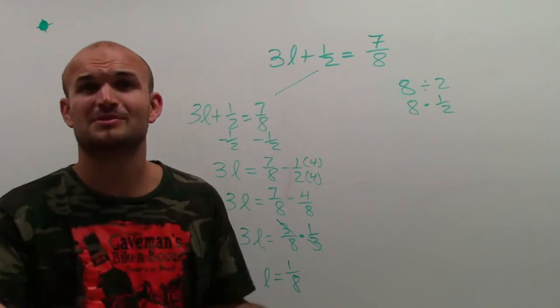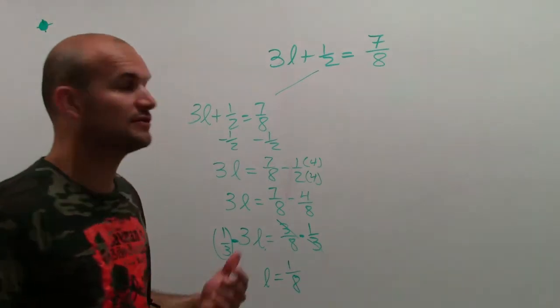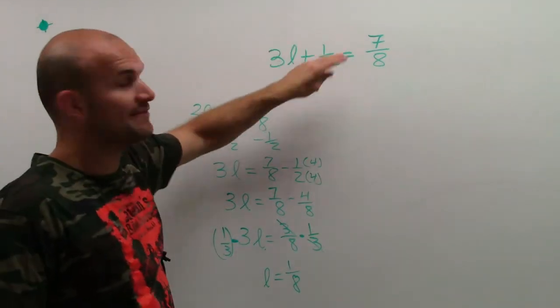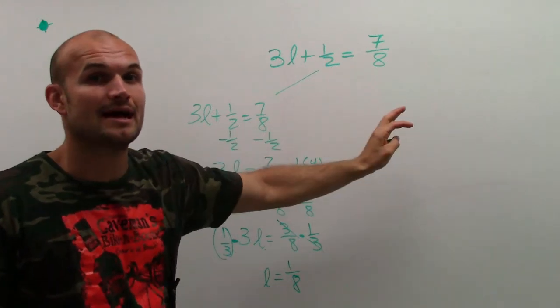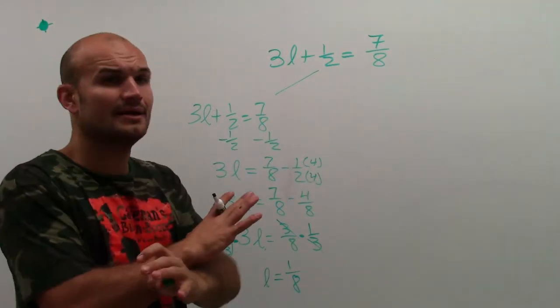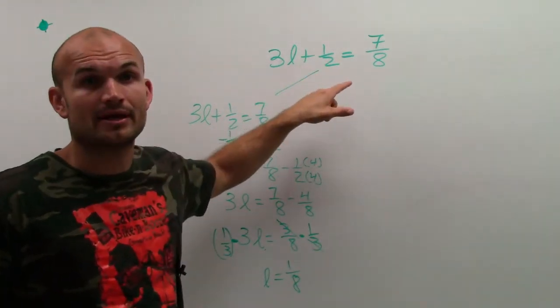And I don't really have too much time, but I'll go through this one quicker. When I have 3L plus 1 half equals 7 eighths, whenever I'm doing my inverse operations or a two-step equation, and I have two different fractions with two different denominators, I automatically know I need to get these to be the same denominator, right?